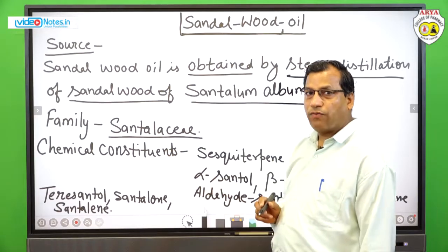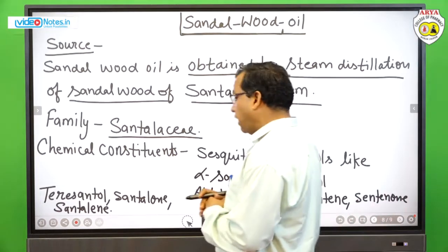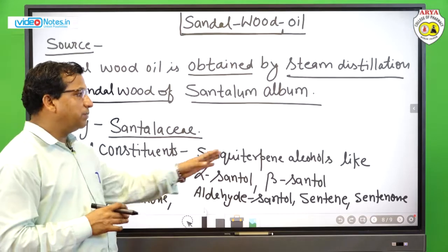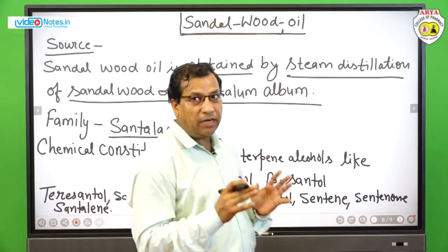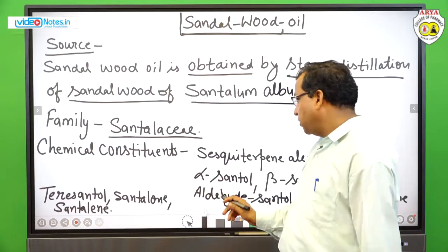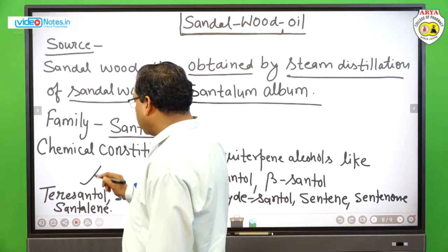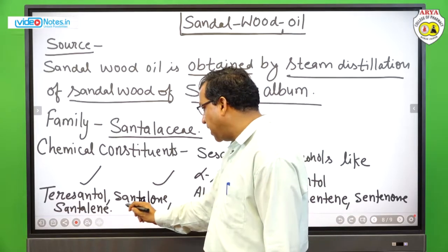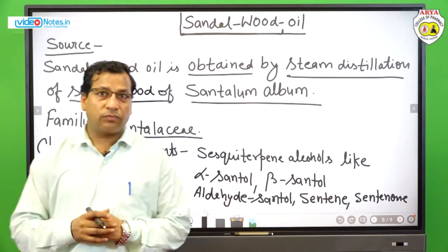Now we will see the chemical constituents of sandalwood oil. Sesquiterpene alcohols are the major constituents. Alpha-santalol and beta-santalol are the main chemical constituents — remember these carefully. Others include aldehyde santalol, santene, santenon, teresantalol, santalon, and santalene, which are also chemical constituents of sandalwood oil.